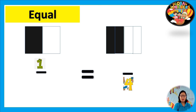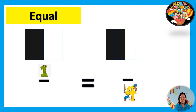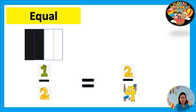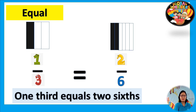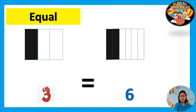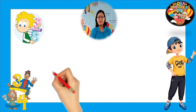Now we will learn about equal. One half equals two fourths — let's check together. Okay, they are equal. Now we have one third. One third equals two sixths — let's check together. Yes, one third equals two sixths. Okay.